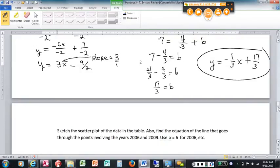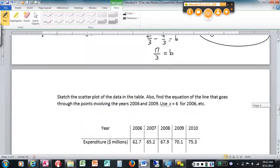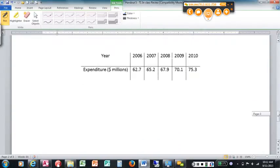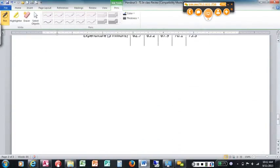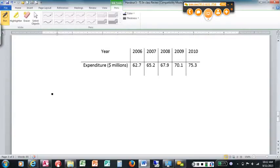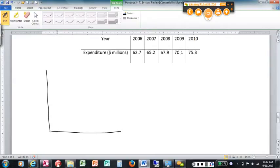Alright. So we did these scatterplots. Here's our data. Got year and expenditure in millions. So the scatterplot, it's going to be one of these guys, right? So we've got 2006. I'm going to use 6 for 2006, 7, 8, 9, and 10 for the year. 6 is 2006.